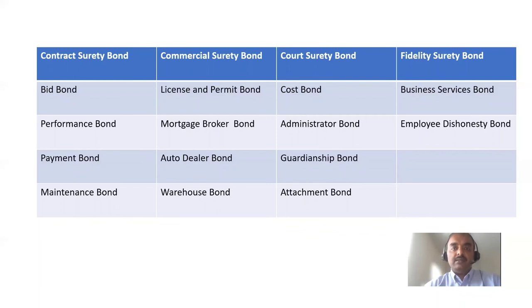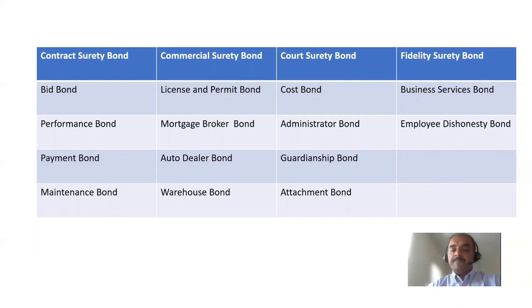Court surety bonds apply when two parties are involved in conflict litigation. They can have bonds like cost bonds and administrator bonds, each with its own significance.